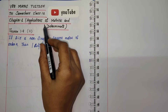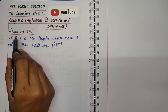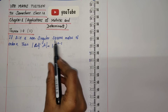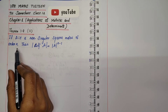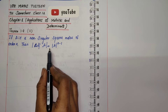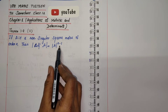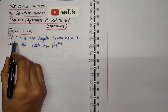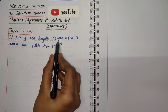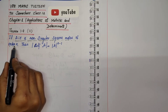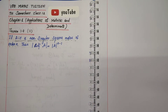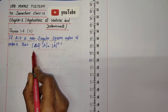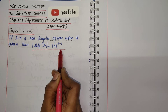Chapter 1: Applications of Matrices and Determinants. Theorem 1.9, part 2. If A is a non-singular square matrix of order n, then determinant of adjoint A is equal to determinant A whole power n minus 1. This is the given condition and what we need to prove.